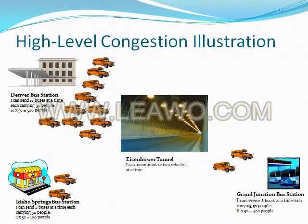In this example, the Eisenhower Tunnel represents the internet routers and switches. You have 12 buses attempting to get to Grand Junction, which can receive eight buses at a time — ten coming from Denver and two from Idaho Springs. TCP's flow control would handle the problem of 12 buses being sent to a receiver that can only handle eight. However, the Eisenhower Tunnel can only handle two buses at a time, so regardless of Grand Junction's capacity, only two at a time can actually get through.